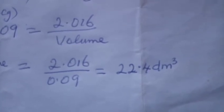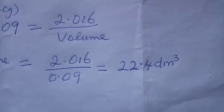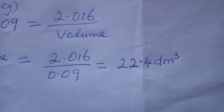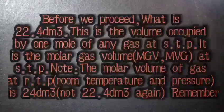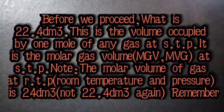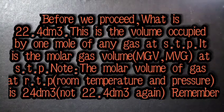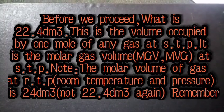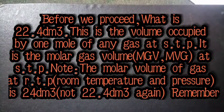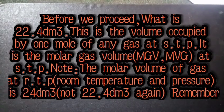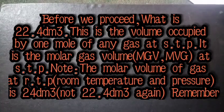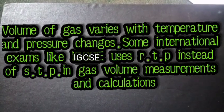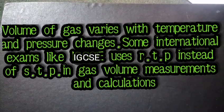Then, why do we apply it for other gases? This is also applicable for other gases based on Avogadro's law, though commonly called hypothesis, but it's now made a law. What is 22.4 dm³? This is the volume occupied by one mole of any gas at standard temperature and pressure. It is the molar gas volume or molar volume of a gas at STP. Note, the molar volume of gas at RTP, that is at room temperature and pressure, is 24 dm³, not 22.4 dm³ again. Remember, volume of gas varies with temperature and pressure changes. Some international exams, like the IGCSE, uses RTP instead of STP in gas volume measurements.